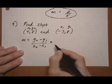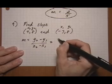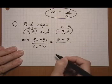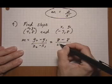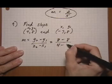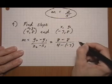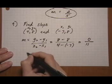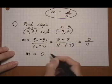Plug it into the formula, y2 which is 8, take away y1 is 8, over x2, 4, take away x1 minus 7, gives us 0 over 11, and that gives us 0.